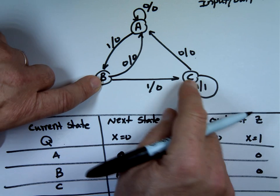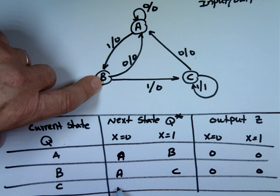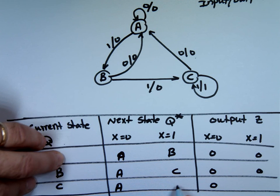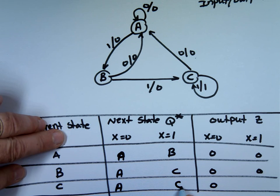And if I'm at C, my input is 0. I go to A. My output is 0. But if I put 1, if X equals to 1, I will stay at C. And now, my output will be what? 1.